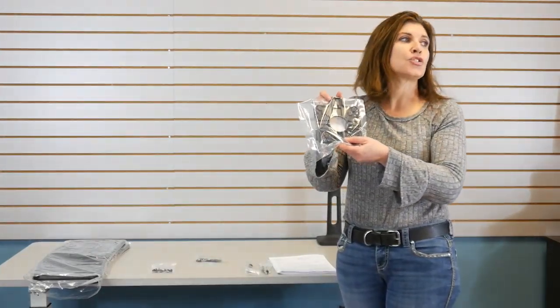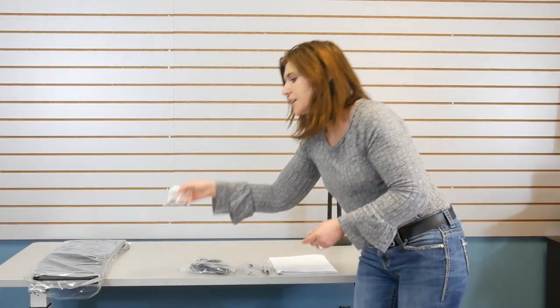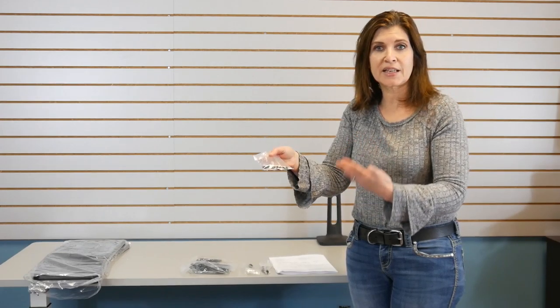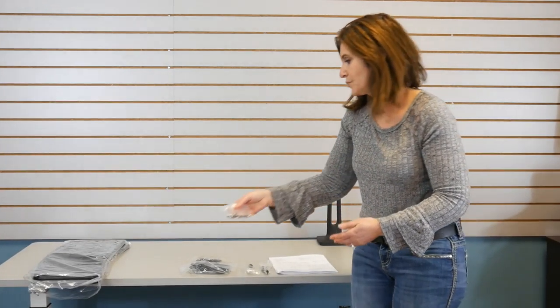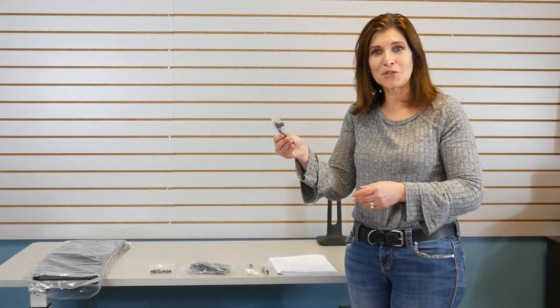Kit C is your VESA quick release plate. Kit D will be the hardware to attach the keyboard tray and the secondary document shelf. And these are your Allen keys which you're going to get very familiar with.